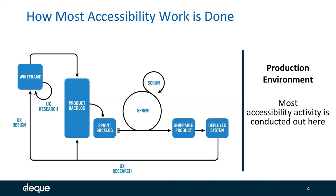Framing this around the software development lifecycle: we have a diagram of an agile-ish SDLC. Starting on the left with design and wireframing, we move into creating a product and sprint backlog, then push into actual development with sprints that go through a QA process and become shippable product before being deployed. Even today, most accessibility activity is done all the way at the end of the software development lifecycle — after we've designed, developed, tested, and deployed.